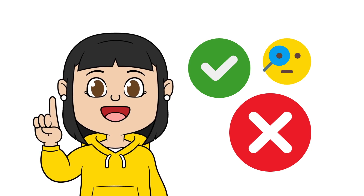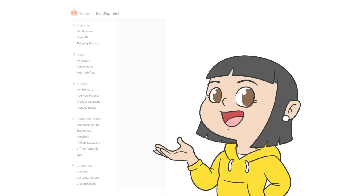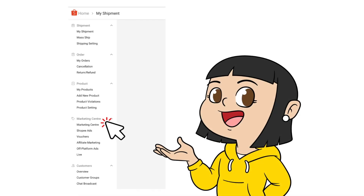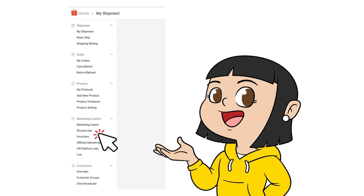Let's start. You can see Shopee ads in your Seller Center. Under Marketing Center, you click Shopee Ads. Now, this is the Shopee Ads dashboard.